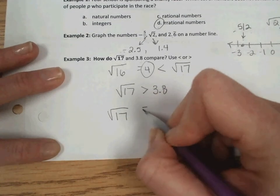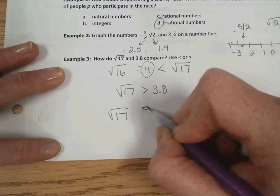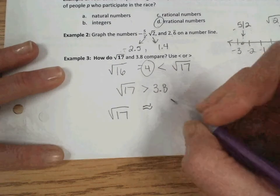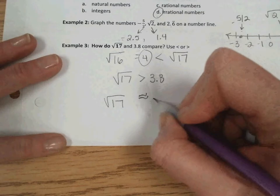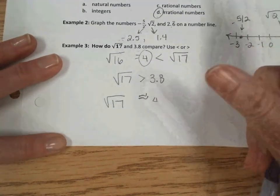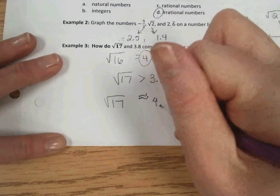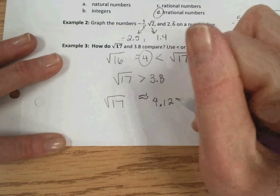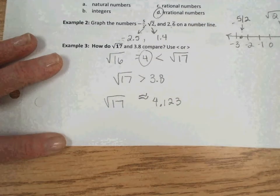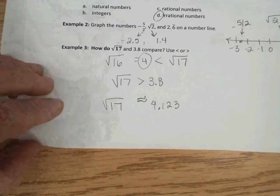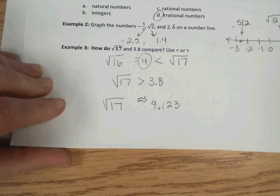You could also enter into your calculator to double check. The square root of 17 equals approximately, I'm going to use my squiggle lines for my equal sign to represent approximately, equal to. So the square root of 17 is approximately equal to 4.123, which of course also is greater than 3.8.